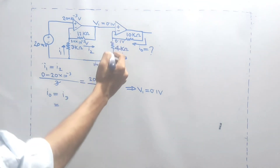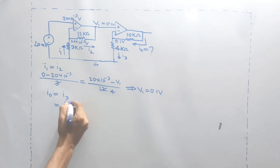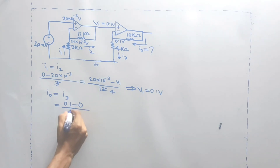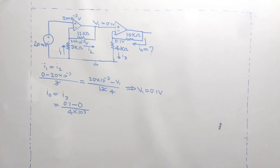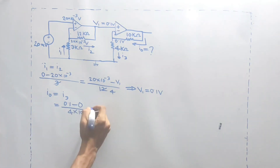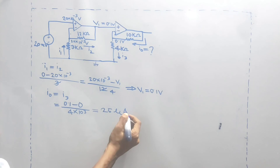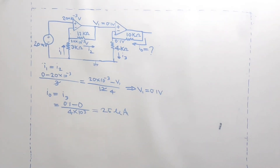We have 1.5 micro Ampere. Very simple problem — just KCL, KBL, DC circuit, and use the basic concept of op-amp to solve the problem.